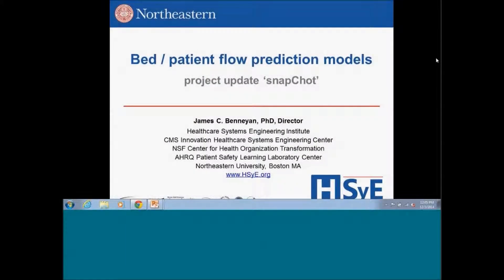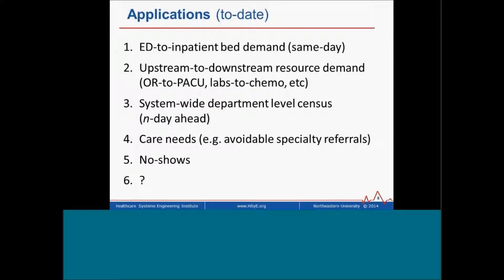Hello, I'm Jim Bennion. I'm at Northeastern University, one of the four, now five, universities that are members of the CHOT Center for Health Organization Transformation. My hope is to give you a fairly broad overview of a number of things we've been doing in predictive modeling so that we can get some feedback as to where this research should go next. I'll step through these applications one at a time and give a sense for the general nature of the problem, the approach we've taken, and where we are so far.